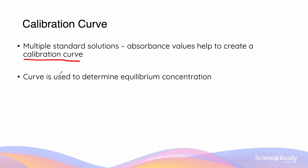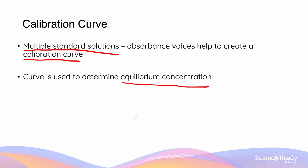The calibration curve is a curve created by drawing a line of best fit through multiple standard solutions' absorbance values, which we can then use to determine the equilibrium concentration of the iron thiocyanate given different absorbances. We'll give an example of how that is done.